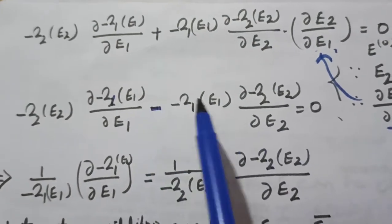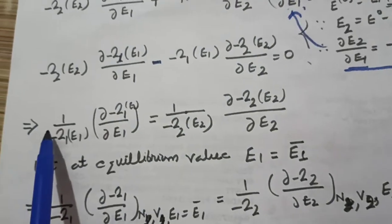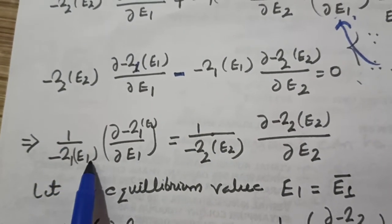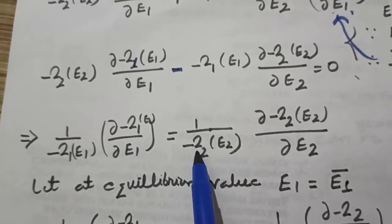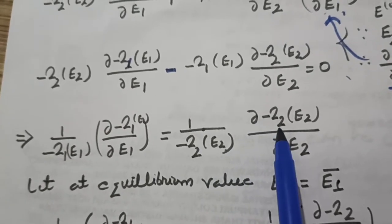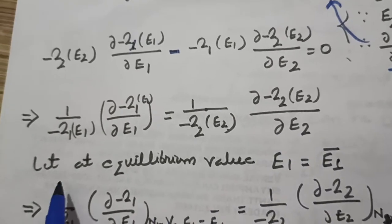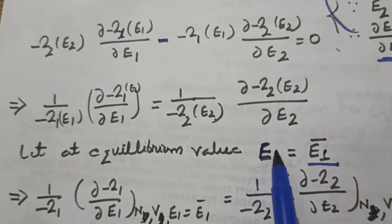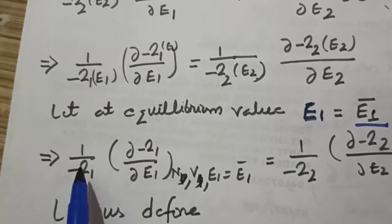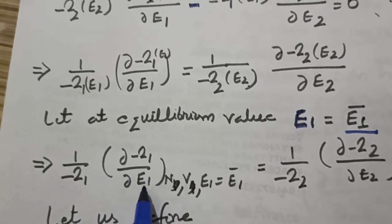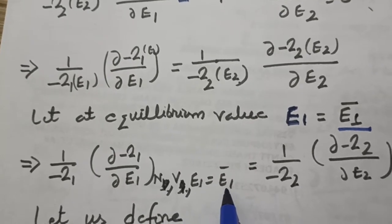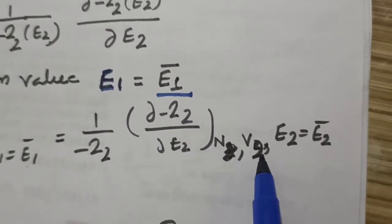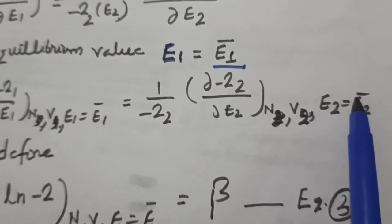Rearranging these terms, we obtain: 1 upon omega1(E1) times the partial derivative of omega1(E1) with respect to E1, equals 1 upon omega2(E2) times the partial derivative of omega2(E2) with respect to E2. At equilibrium, E1 takes its average value E1-bar. So this becomes: (1/omega1) × (d omega1/d E1) at N1, V1, E1=E1-bar, equals (1/omega2) × (d omega2/d E2) at N2, V2, E2=E2-bar.